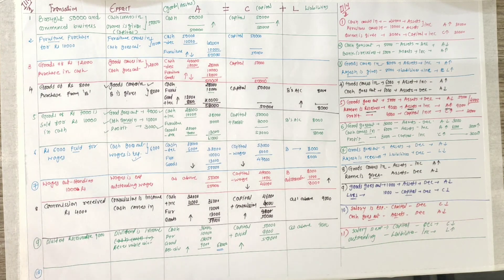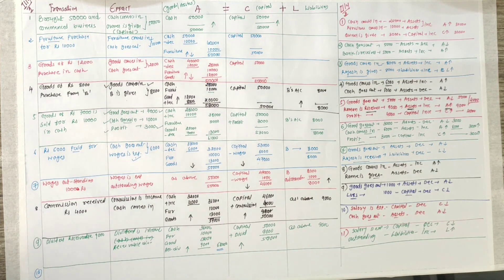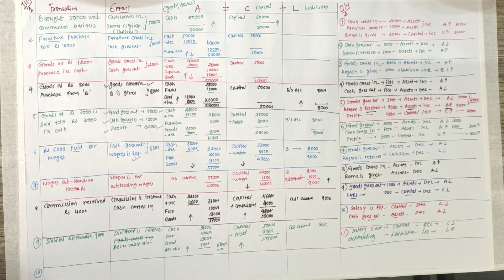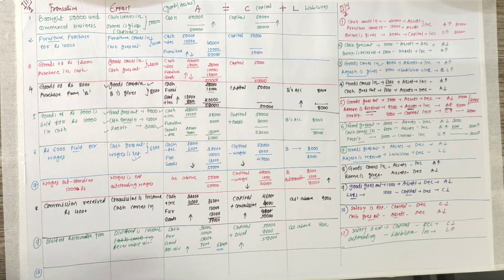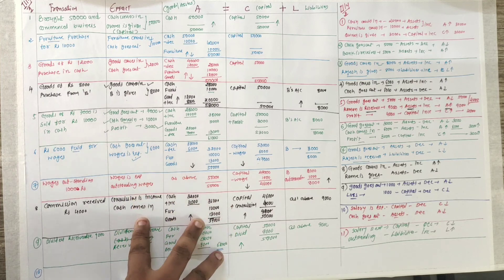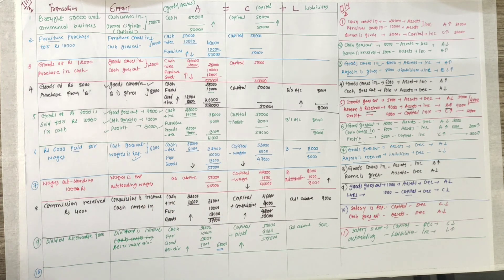We stop here today. Transactions 12 to 18 you should solve on your own as homework. If you have any problem, my number is given — you can contact me. This was chapter number 5. Best of luck for your next exam. I hope everything was clear. Jai Hind, Jai Bharat.